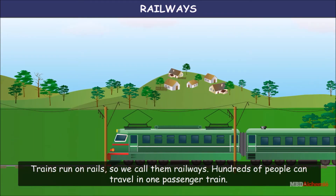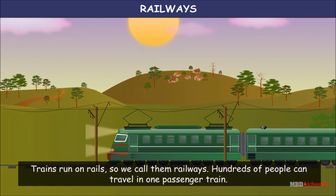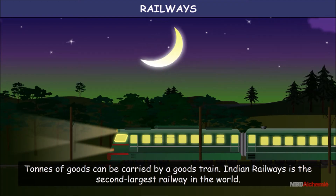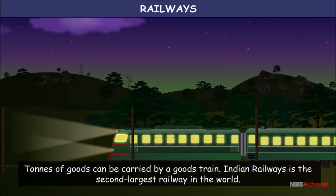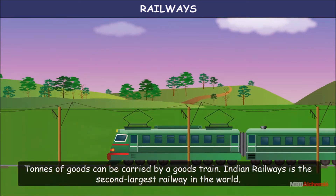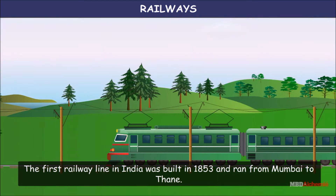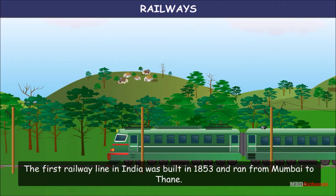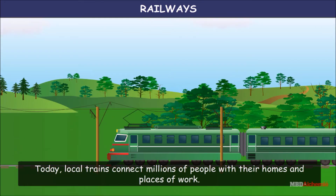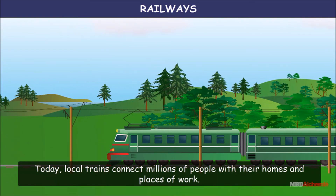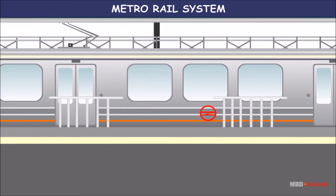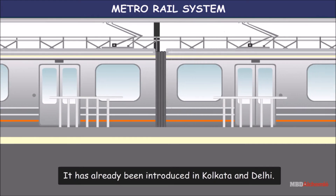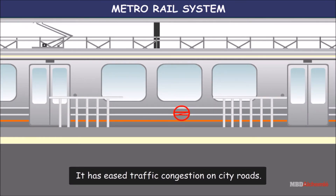Railways: trains run on rails, so we call them railways. Hundreds of people can travel in one passenger train, and tons of goods can be carried by a goods train. Indian Railways is the second largest railway in the world. The first railway line in India was built in 1853 and ran from Mumbai to Thane. Today, local trains connect millions of people with their homes and places of work.